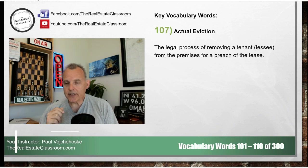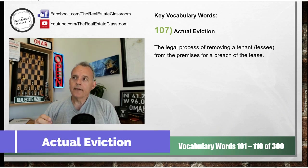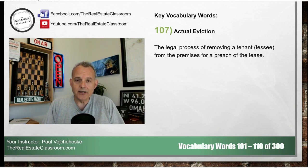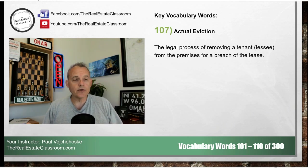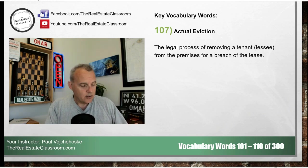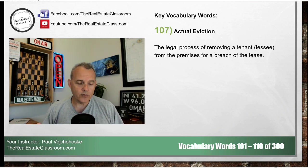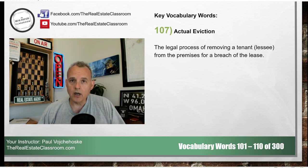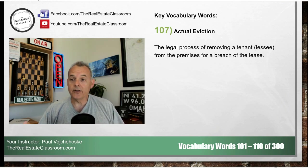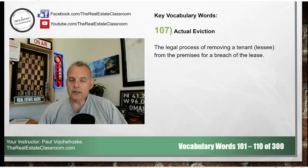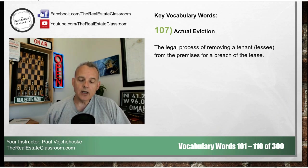Number 107: actual eviction. This is where the tenant needs to be removed legally from the premises. It's a legal process in which the tenant is legally removed for a number of reasons — maybe they didn't pay rent, or there was a breach in the terms of the lease contract, or the tenant is violating a law or ordinance such as dealing drugs, operating a business out of a dwelling not zoned for it, or violating zoning law. Those are all grounds for actual eviction.